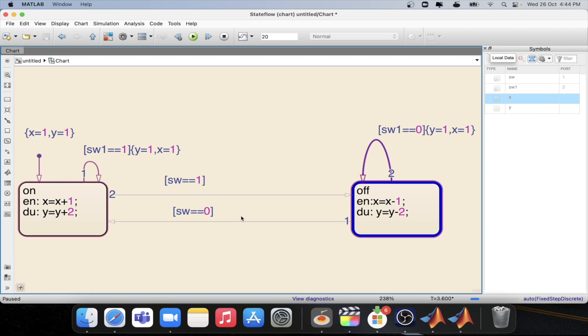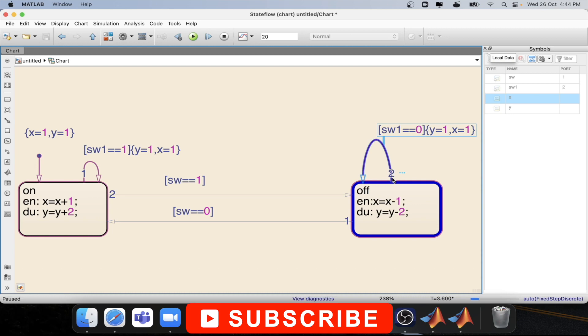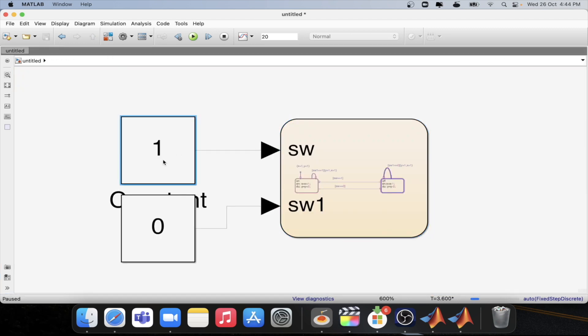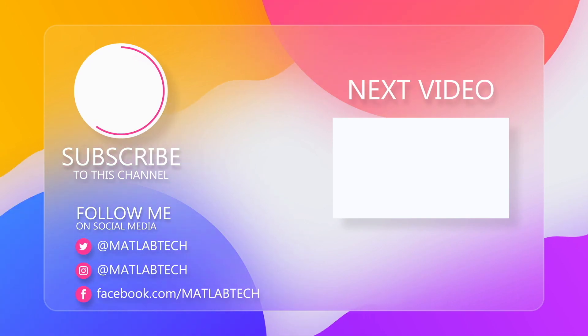Now suppose I turn on this particular condition. Then this condition will not execute because it has a priority of second priority. So let's see whether it is happening or not. So let's see.